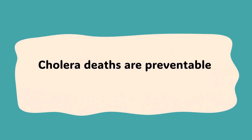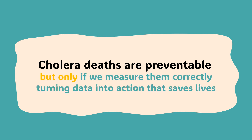We have to remember why all of this is so incredibly important. Almost all deaths from cholera are preventable — this is a disease people should not be dying from. With adequate rehydration, people survive. Getting the data right is one of the most fundamental steps to making sure that prevention becomes a reality, and getting this one simple distinction in mortality data right allows us to direct our efforts precisely where they're needed most. That turns data into action that saves lives.